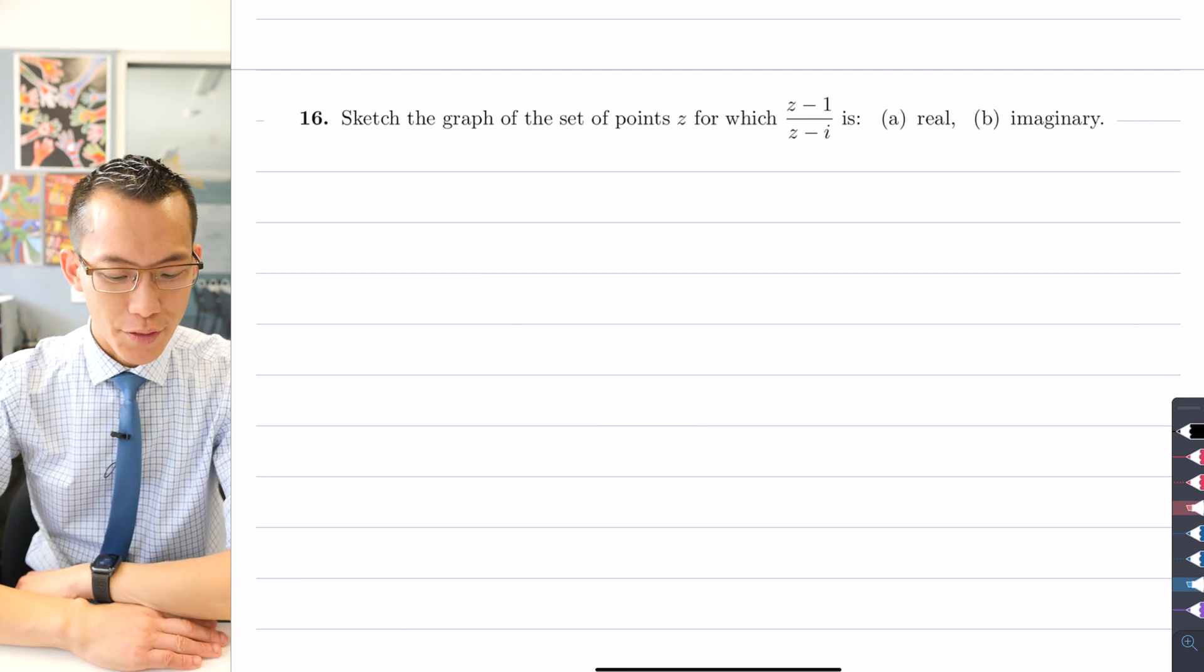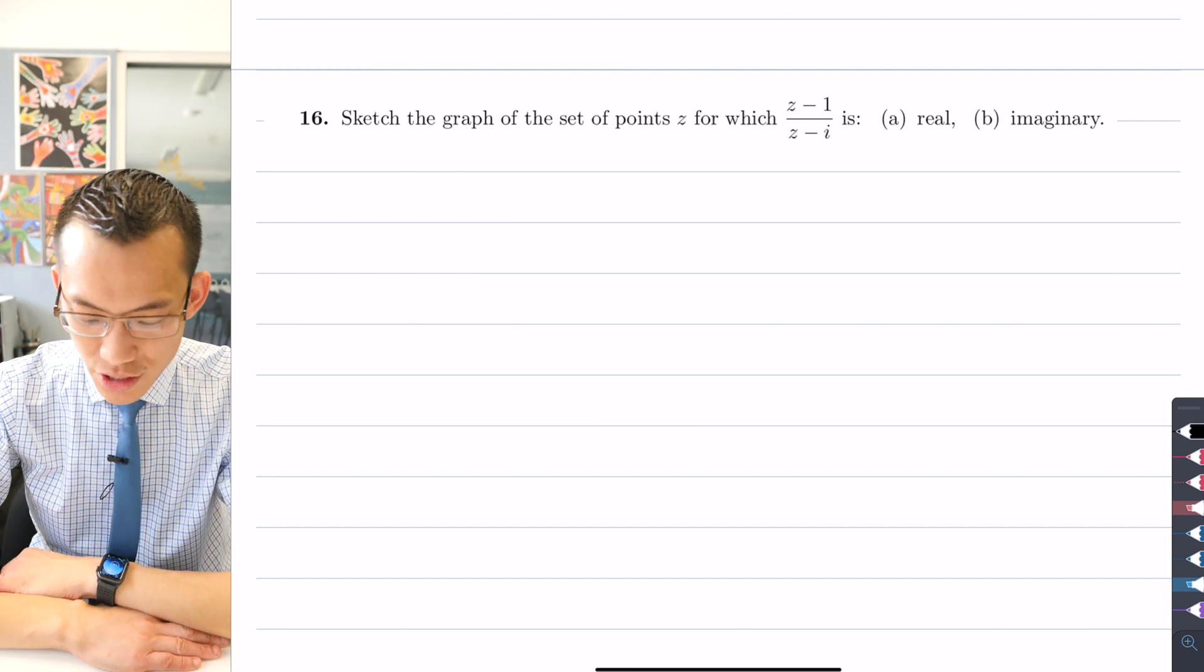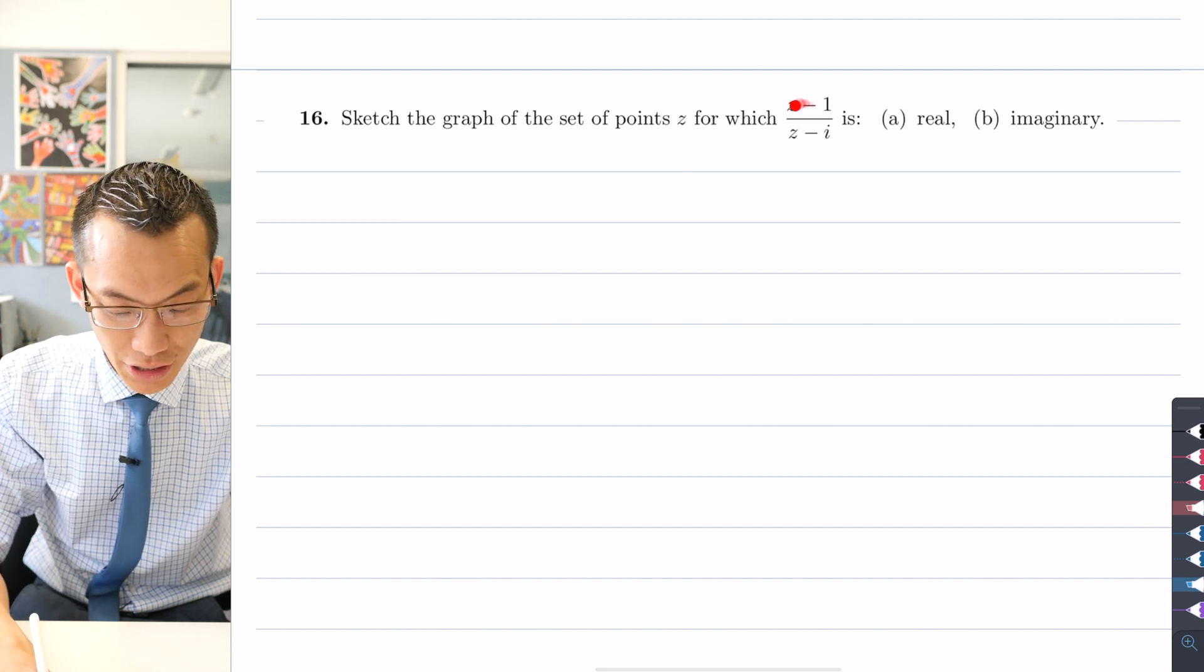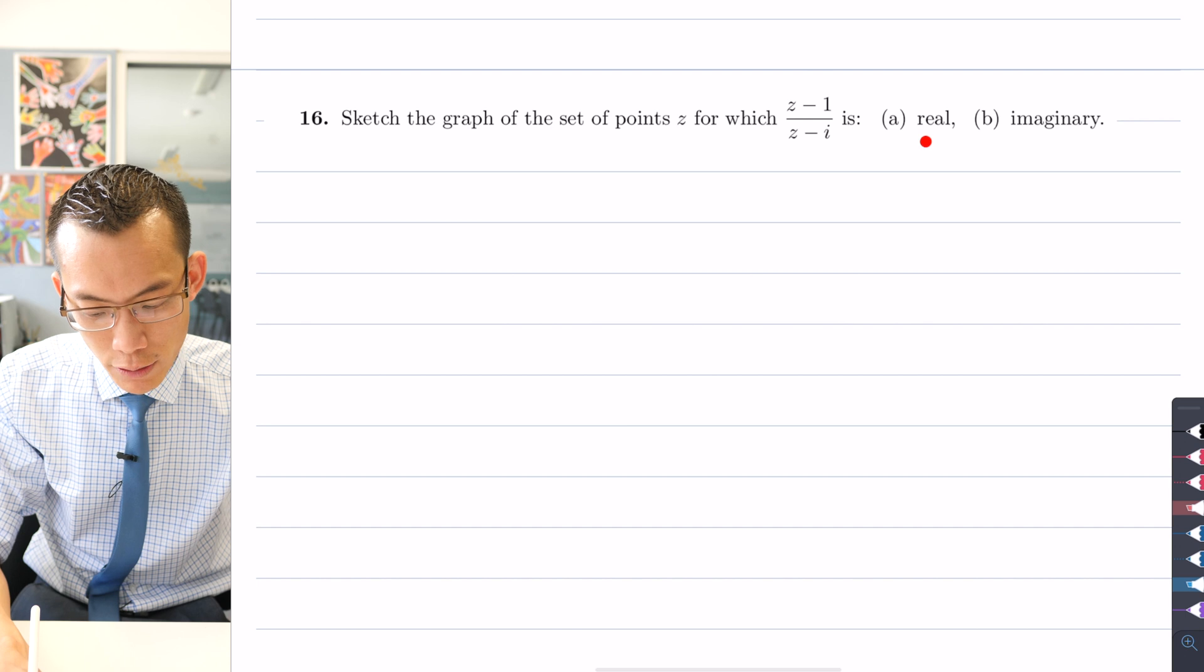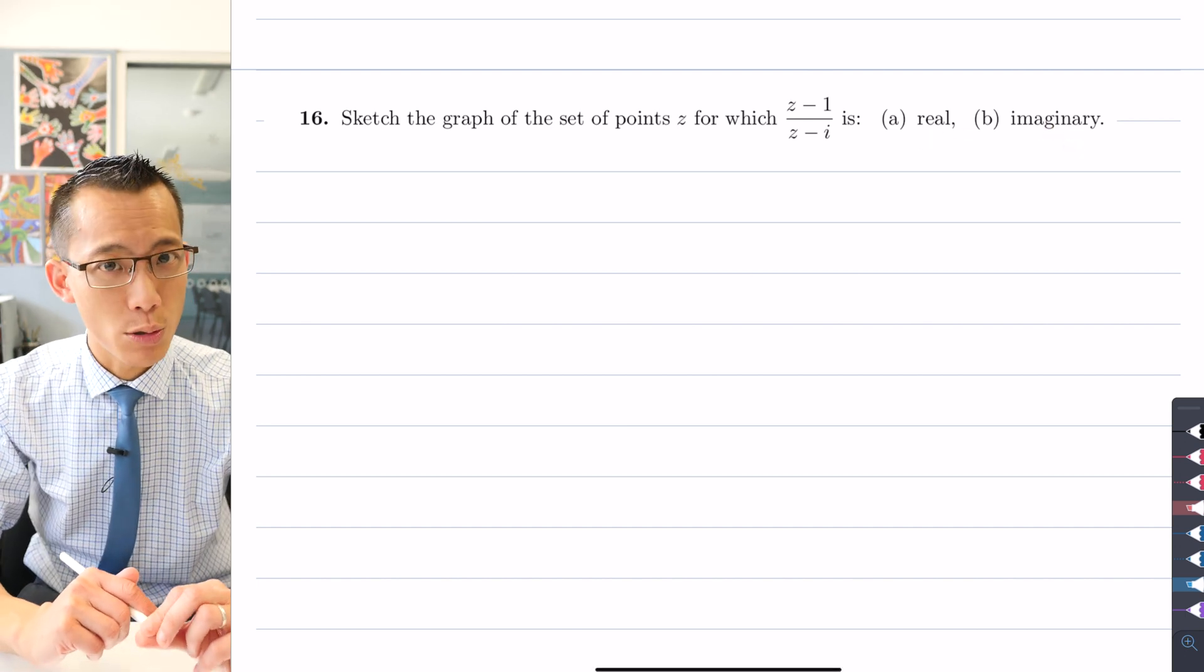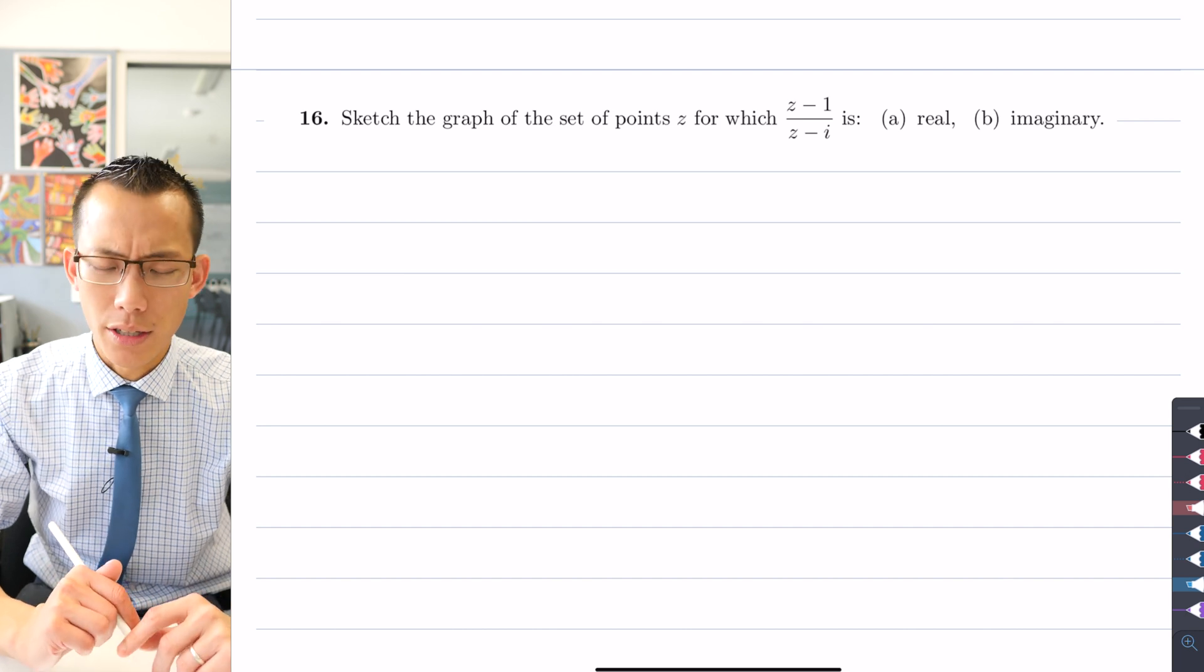Sketch the graph of the set of points z for which (z minus 1)/(z minus i), this fraction here, whatever that's equal to, for which that is real or imaginary. We're going to get two different graphs here at these two different questions. So how do I tackle this?